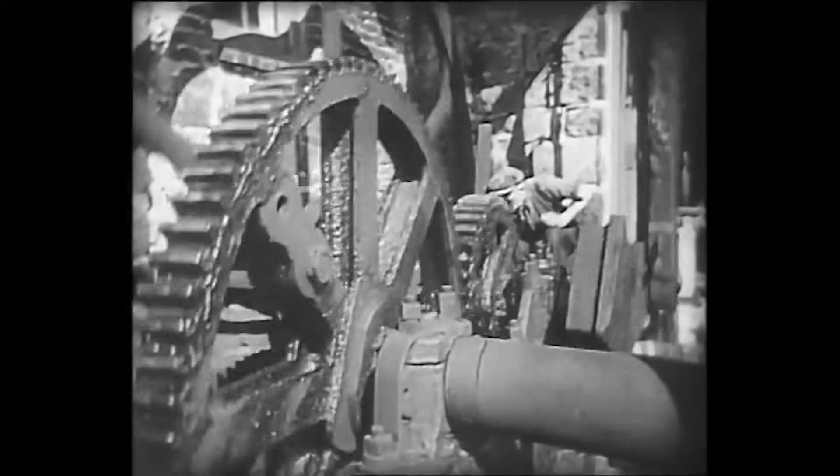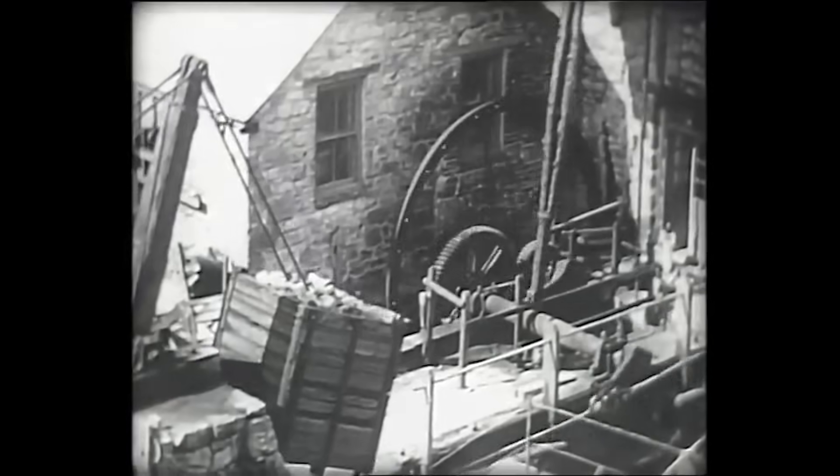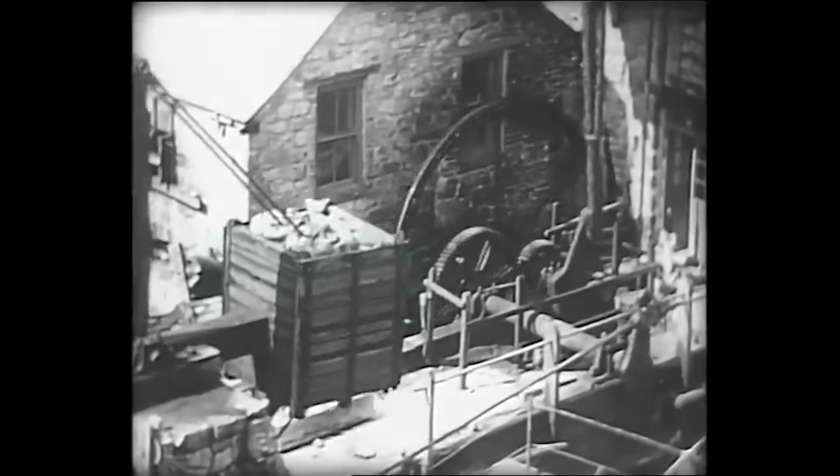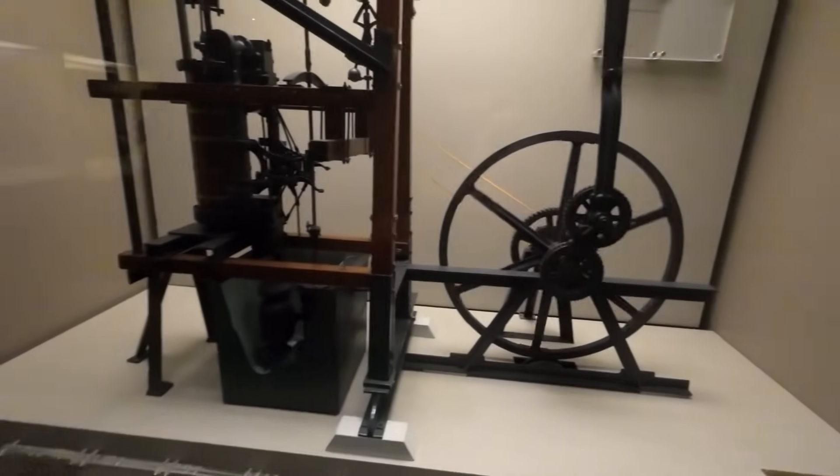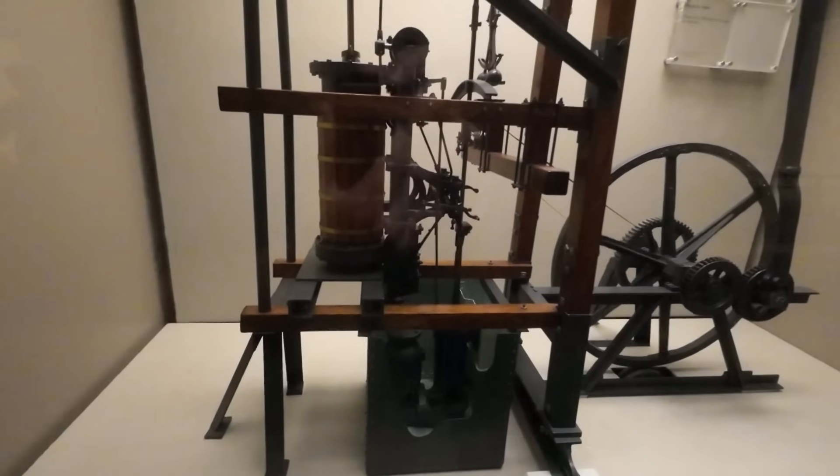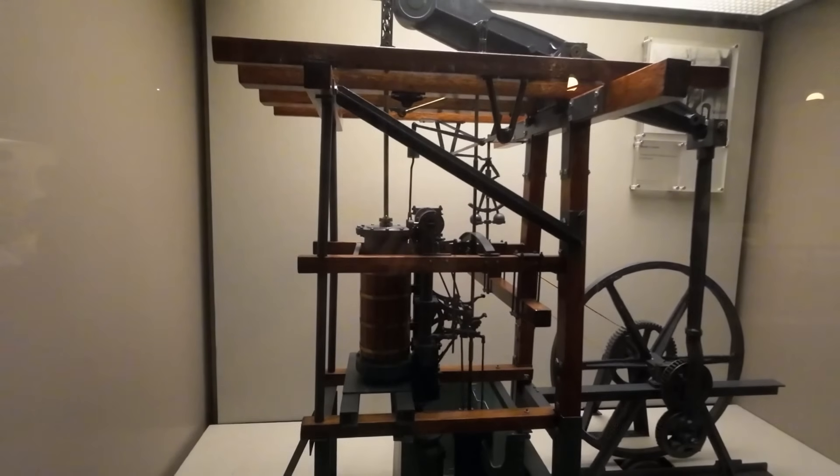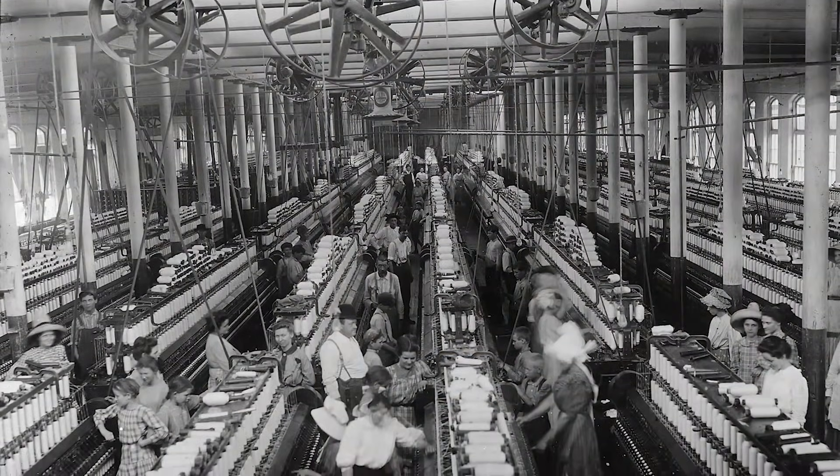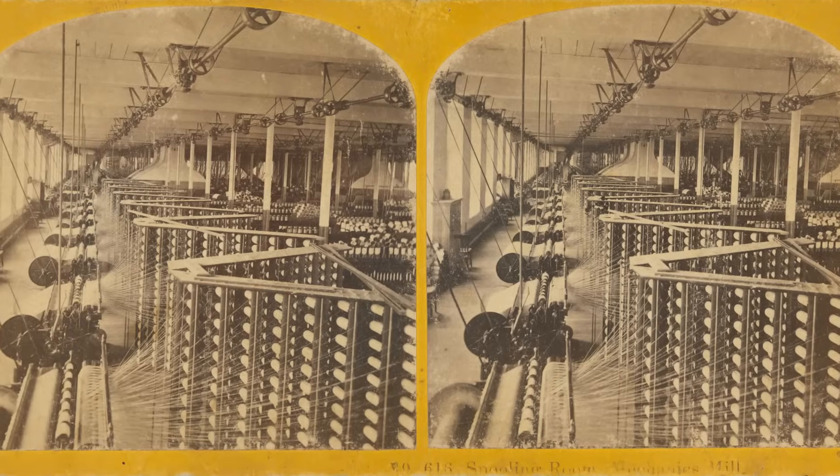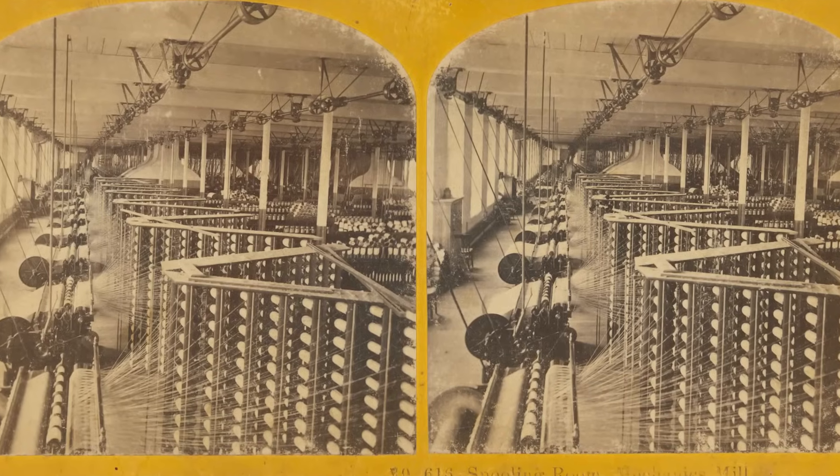From the humble crank to the mesmerizing sun and planet gear, the Industrial Revolution birthed a whole range of methods to achieve the vital task of converting the reciprocating linear motion of steam engine pistons into continuous rotary motion transmitted through gigantic flat belts across vast factories, and used to power pretty much every machine at the time.